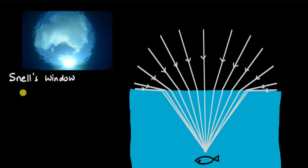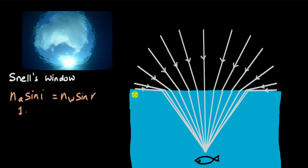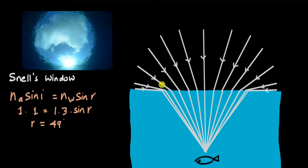At an angle of incidence of 90°, using Snell's law: Na × sin(i) = Nw × sin(r), where Na = 1, sin(90°) = 1, and Nw = 1.3. The angle of refraction comes out to approximately 49 degrees. This means the total cone angle is 49 × 2 ≈ 98 degrees. So the entire 180-degree horizon is compressed into a cone of 98 degrees — that view through the window represents the entire horizon.